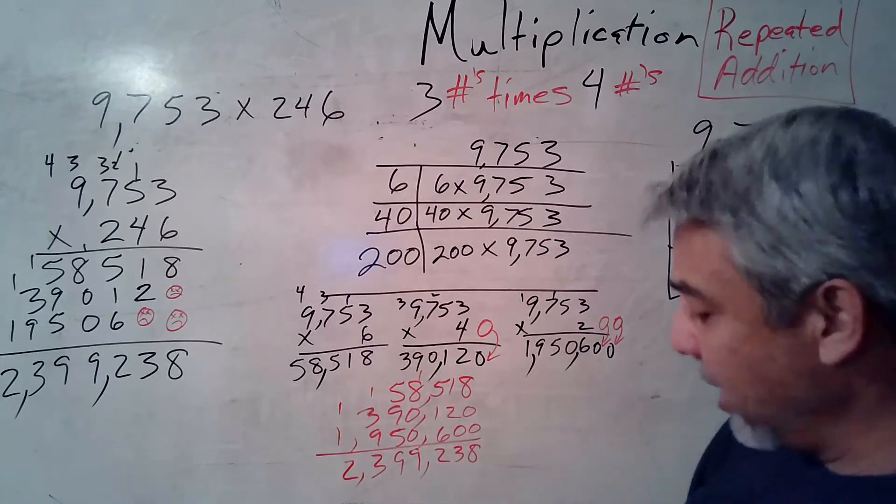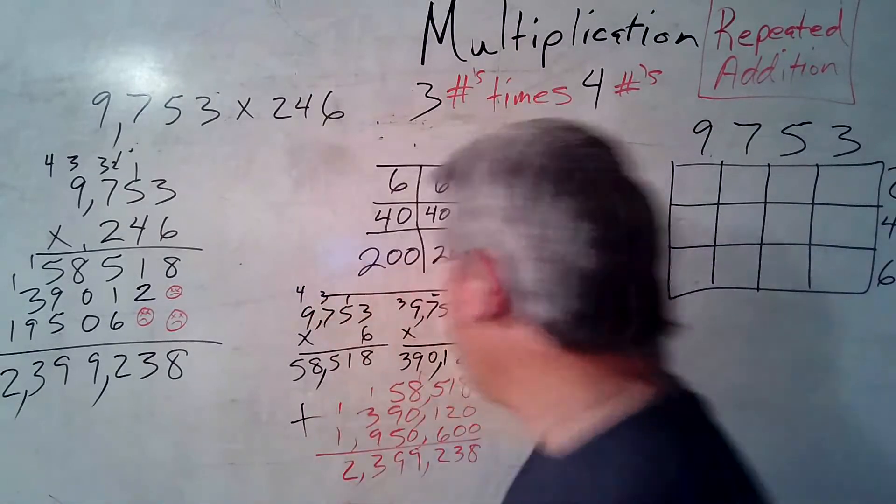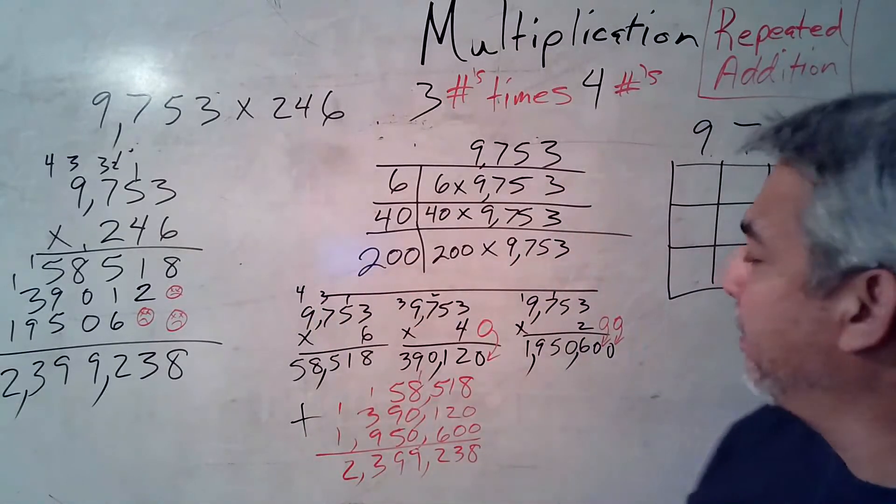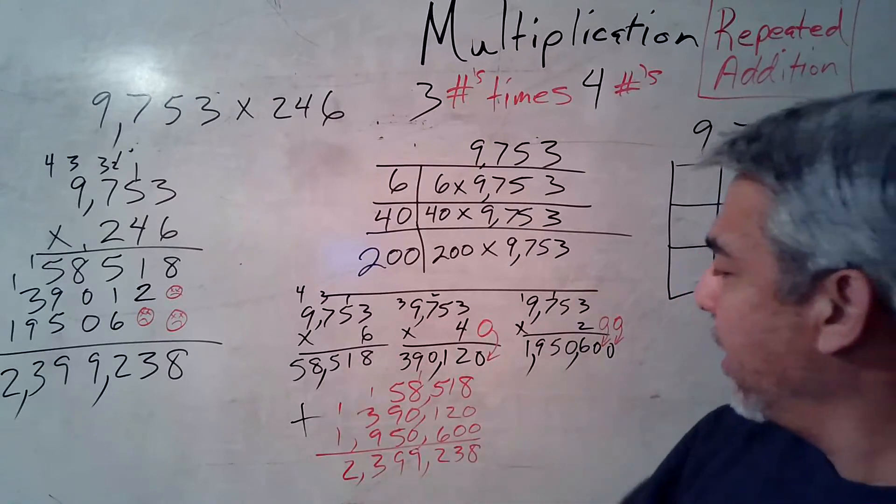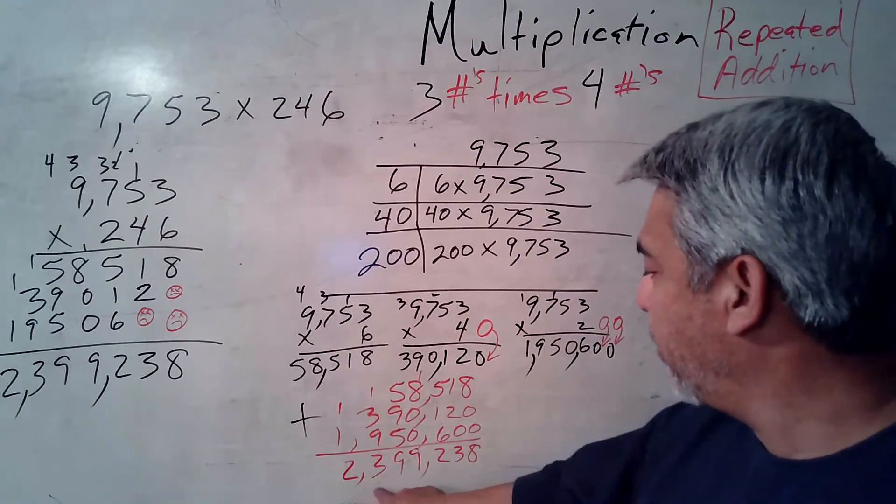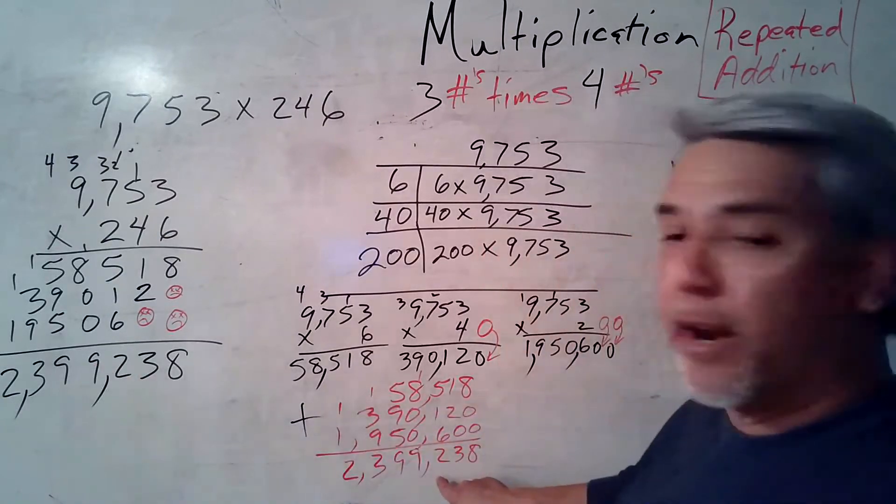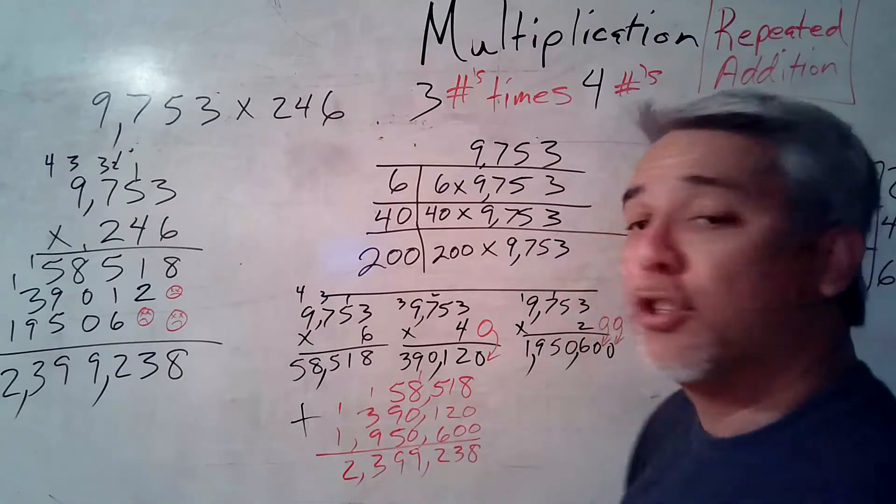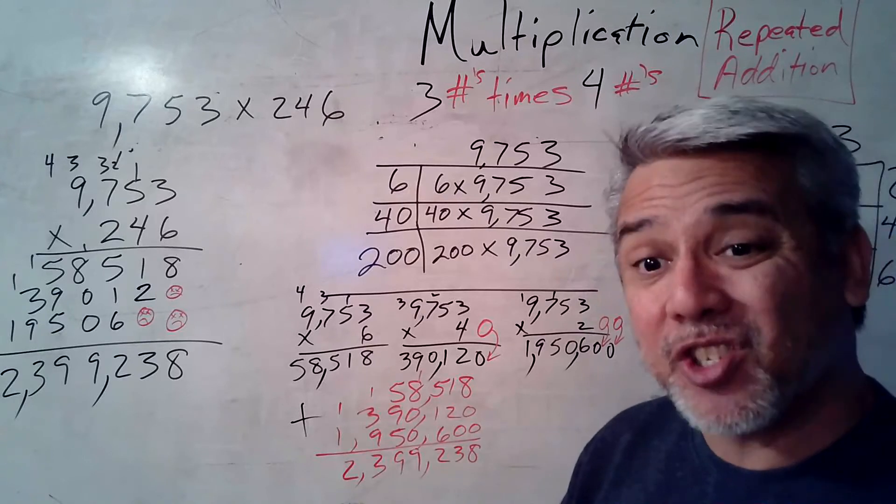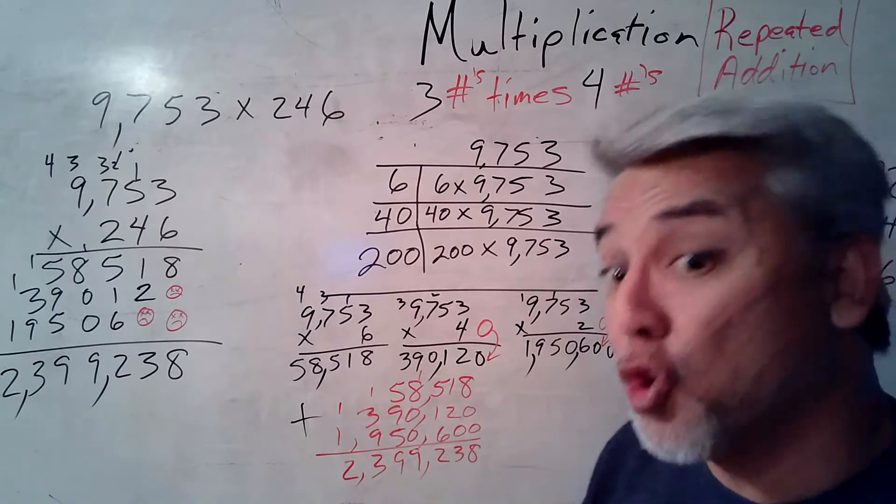But wait. There's more. You got to add all that up. And when you do that, line it up. Count it up. Hey, look. 2, 3, 2, 3. 9, 9, 9. 238, 238. Do my answers match? Yes, they do. All right.